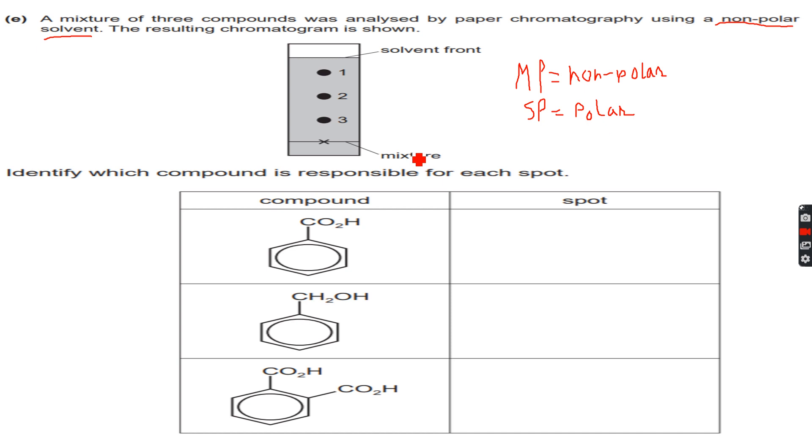Identify which compound is responsible for each spot. We are given three compounds and we have to identify which spot corresponds to which compound. First let's see one, two, and three. Three travels the least distance so it is the most polar because it has dissolved the most in the stationary phase.